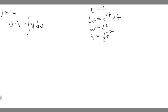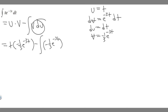Now we can plug in. It equals u times v minus the integral of v times du, so: t times minus 1 over 3 e to the minus 3t, minus the integral of minus 1 over 3 e to the minus 3t times dt. Multiplying out, this is minus 1 over 3 t times e to the minus 3t, minus the integral of minus 1 over 3 e to the minus 3t dt. Now we just need to solve that remaining integral.